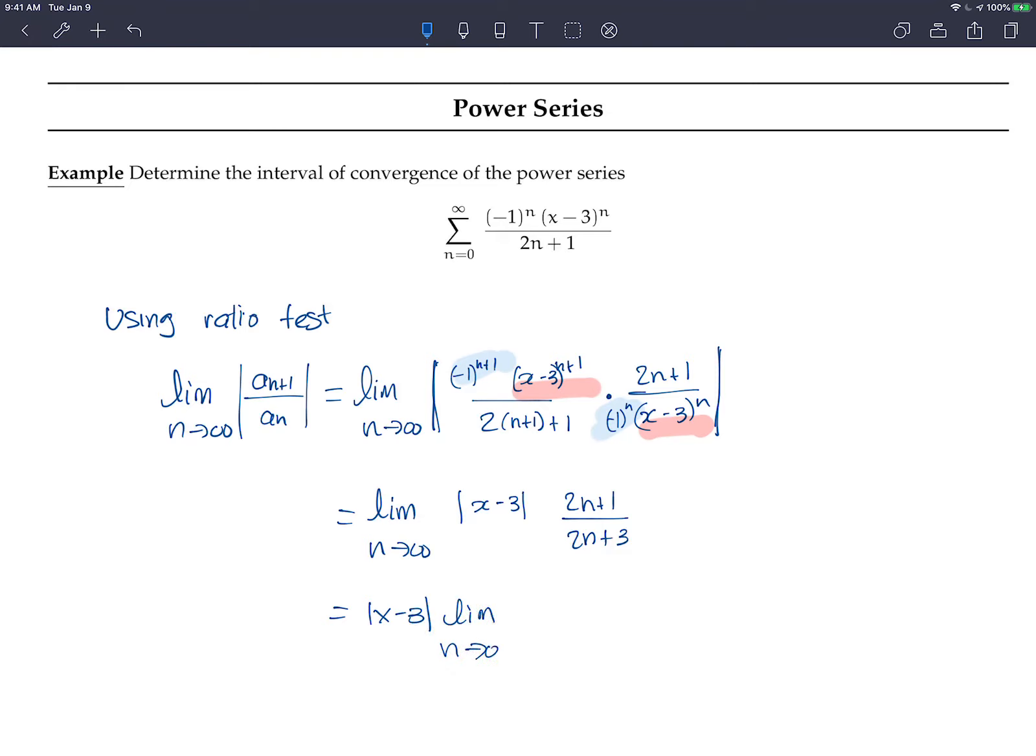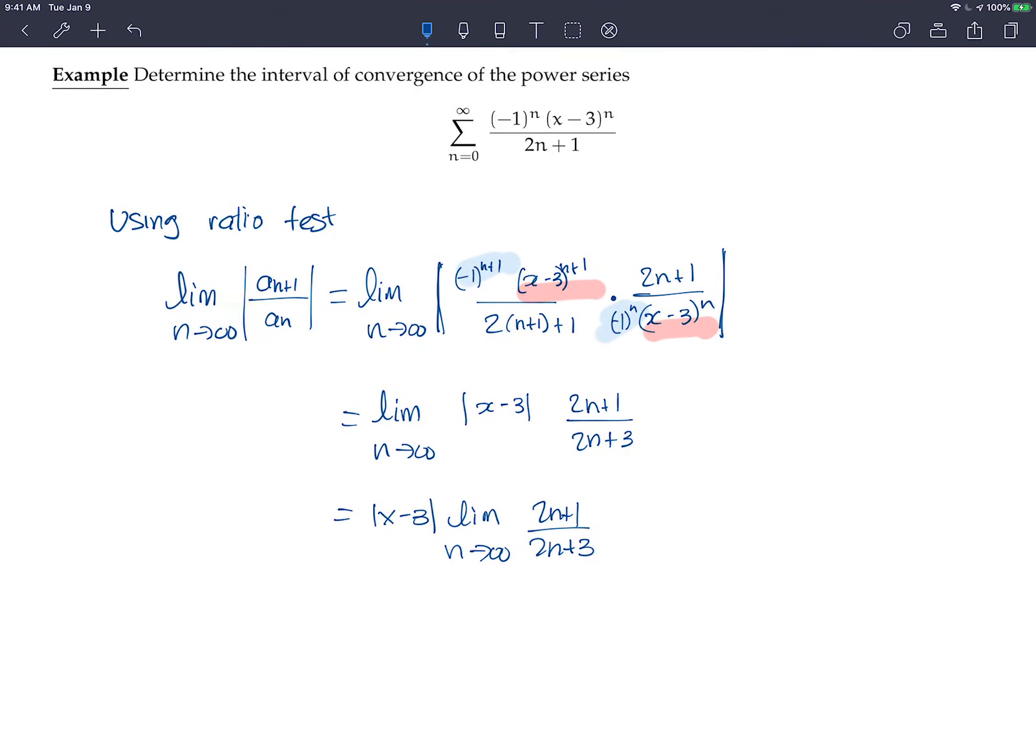I'm taking the limit only of the 2n plus 1 divided by 2n plus 3 part. And again, this limit is 1, so the only thing we have here is x minus 3 times 1. This limit is 1 because it has the same power in the numerator as the denominator. If you want to do it carefully, you would divide by n each term, so you have 2 plus 1 over n divided by 2 plus 3 over n, and the limit is 2 divided by 2, so it's 1.